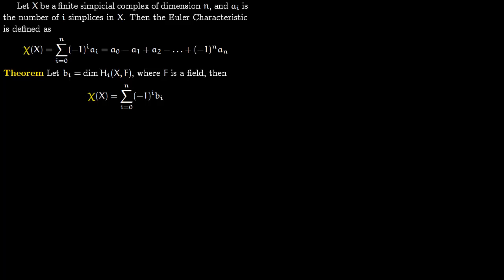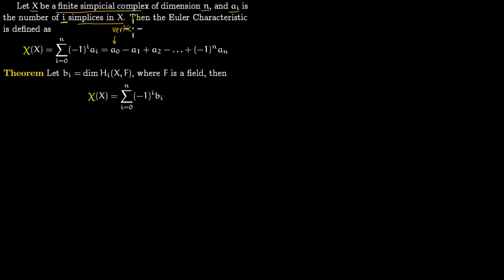In this lecture we talk about Euler characteristic. Say x is a finite simplicial complex with dimension n, and say a_i is the number of i-simplices in x. Then the Euler characteristic is defined as the summation of (-1)^i * a_i. So you have a_0 minus a_1 plus a_2 and so on. Here a_0 is zero-cells (vertices), a_1 is one-cells (edges), a_2 is two-cells, and so on. If you know a CW complex, this is the standard definition of Euler characteristic.